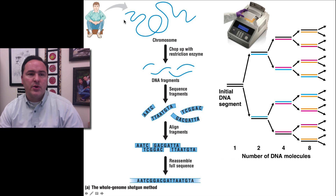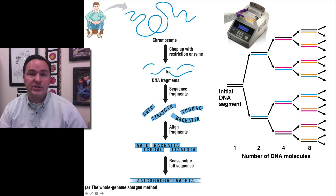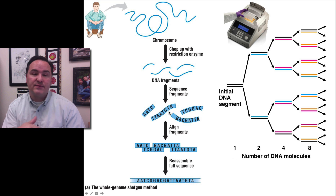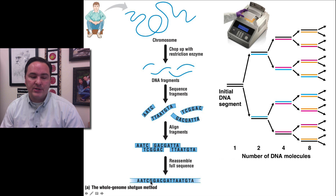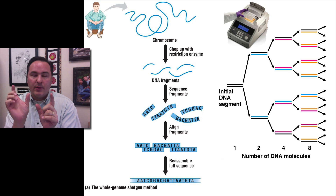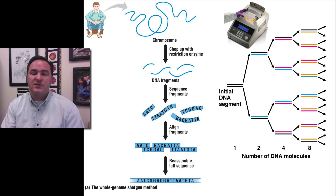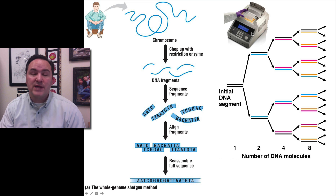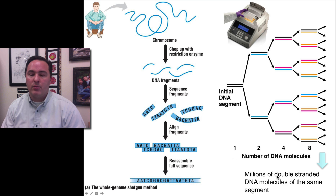For example, you can take a human, take all its chromosomes and all its DNA, and chop it up using restriction enzymes — these molecular scissors. If you do this enough times on enough pieces of DNA, you'll end up with enough overlapping segments to eventually put together the entire genome again. If we're only interested in certain regions of DNA, we can do PCR and amplify just those specific regions, using a thermal cycler machine, ending up with millions of double-stranded DNA molecules of that same segment.